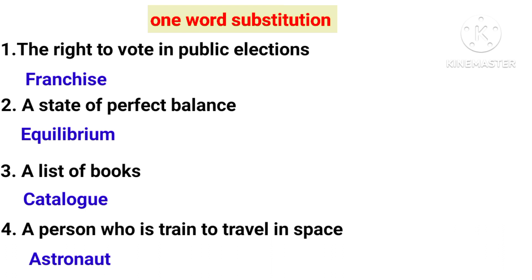A state of perfect balance is called — what is the state of perfect balance? The correct answer is equilibrium. This will be a familiar answer for science students.